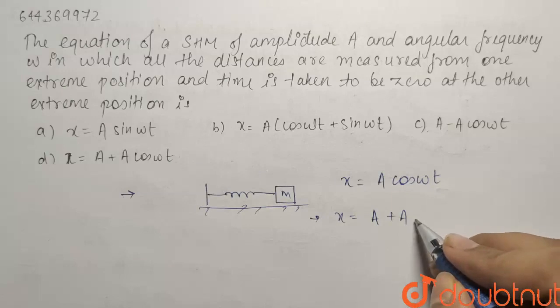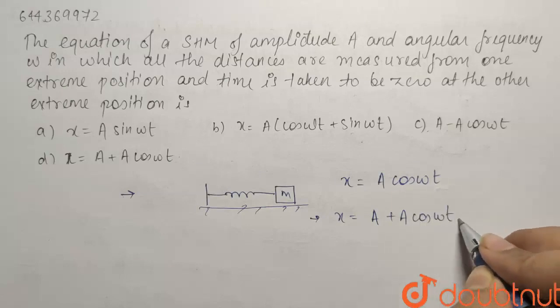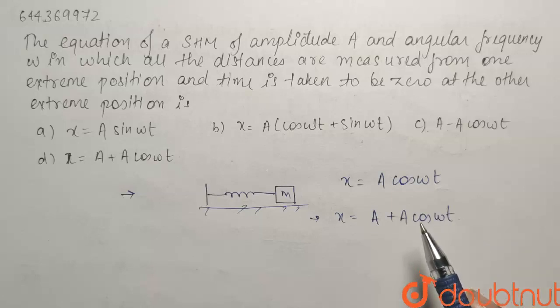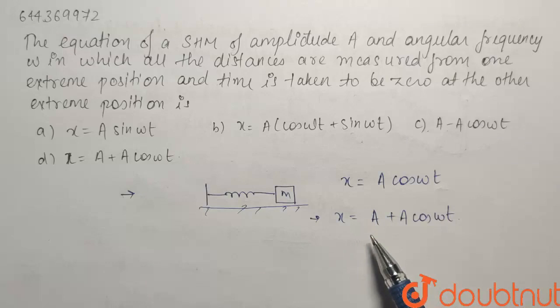So it will become A plus A cos omega t. Why? Because now I am seeing everything from the frame of reference of the amplitude. I just added the relative displacement and what we got was the real equation.